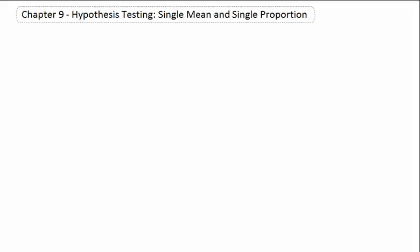One part of inferential statistics is making an estimation of a parameter based on a sample — that's what we saw back in chapter 8. Today we're going to take a look at the other part of inferential statistics, which is to verify a claim using a sample. The essential question is how do we test a claim, specifically about a single mean or a single proportion. In chapter 10 we'll start looking at two means and two proportions.